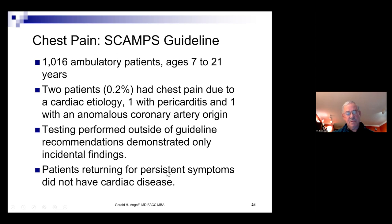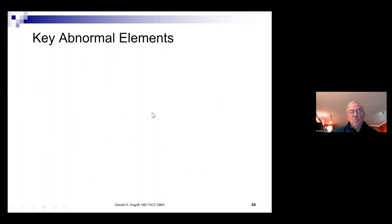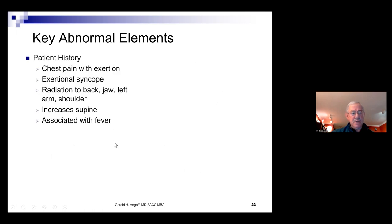Notably, testing performed outside the guideline recommendations demonstrated only incidental findings. Patients returning for persistent symptoms did not have cardiac disease, and assessment of most of these one thousand patients was accomplished and was completed with one outpatient physician visit. Here were the abnormal results, the abnormal elements looked for in the guideline. In terms of patient history, elements that generated some concern that were triggers for further evaluation.